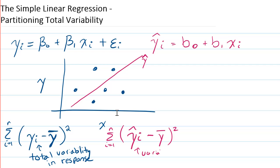So variability explained by the model, because yi hat is basically the predicted value by the model.